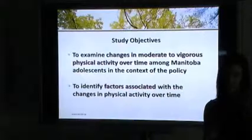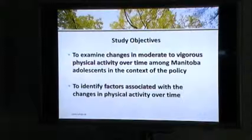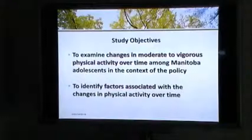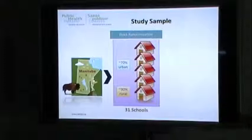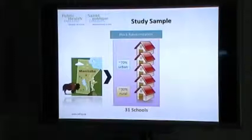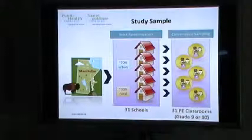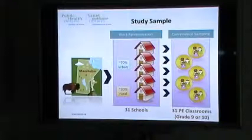We just published a paper this month in the Journal of Obesity. The objectives were to examine changes in moderate to vigorous physical activity over time among Manitoba adolescents in the context of this physical education policy, and to identify factors associated with these changes. To do this, we randomly selected secondary schools in Manitoba to reflect the geographical composition — 70% from urban areas and 30% from rural areas — and then recruited students within each school.